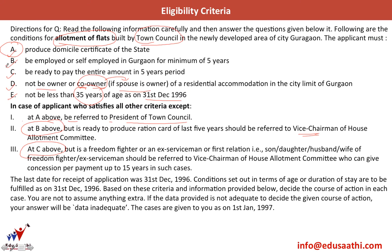And if C is an exception — all other conditions are met but the person is not ready to pay the entire amount in five years — but that person is a freedom fighter, an ex-serviceman, or a first relation (son, daughter, husband or wife of the freedom fighter or ex-serviceman), the concession should be referred to the vice chairman of the house allotment committee, who can give concession on payment up to 15 years. The last date for receipt of application is 31st December 1996. Conditions on age or duration of stay are to be fulfilled as on 31st December 1996 — meaning the 35 years of age and the minimum five years of employment must be met before this date.